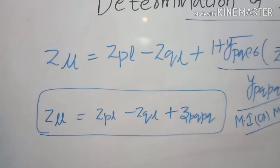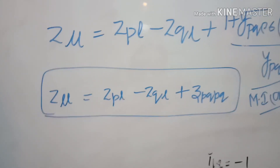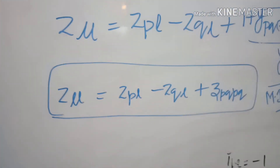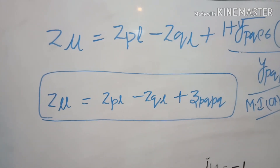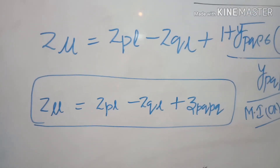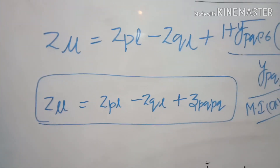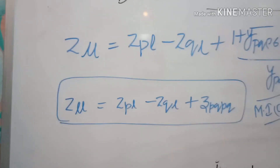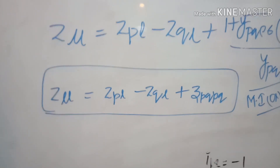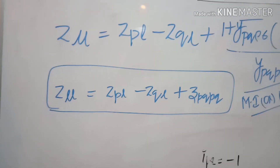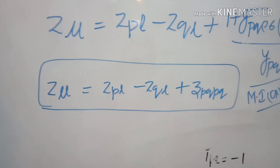In this video we got the diagonal element of the temporarily modified Z-bus matrix. In the last video we got the half diagonal elements of the temporarily modified Z-bus matrix. After this temporary modification, we will see how to re-evaluate all the elements of the previous Z-bus matrix to get the new matrix with the addition of a link. We will see that in the next video. Thank you very much — if you like this video, please share and subscribe.